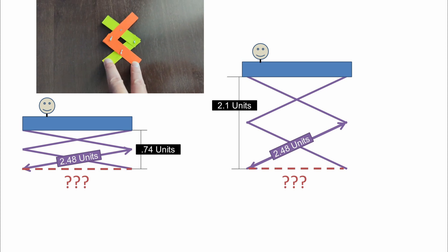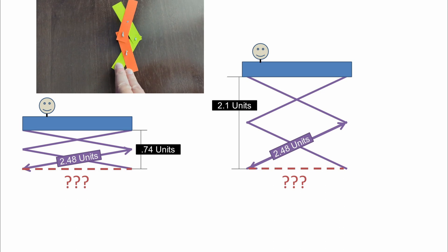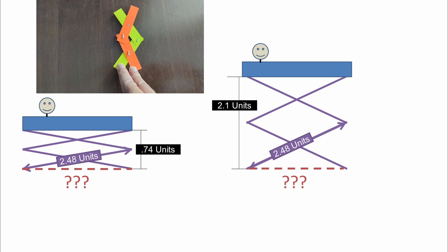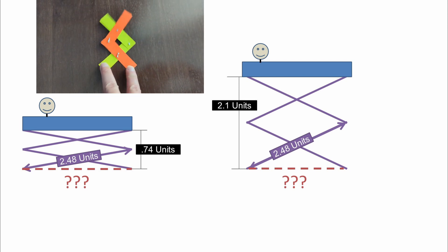It has an initial height of 0.74 units. We want to find out how much we must reduce the scissor lift span at the base to reach a height of 2.1 units.